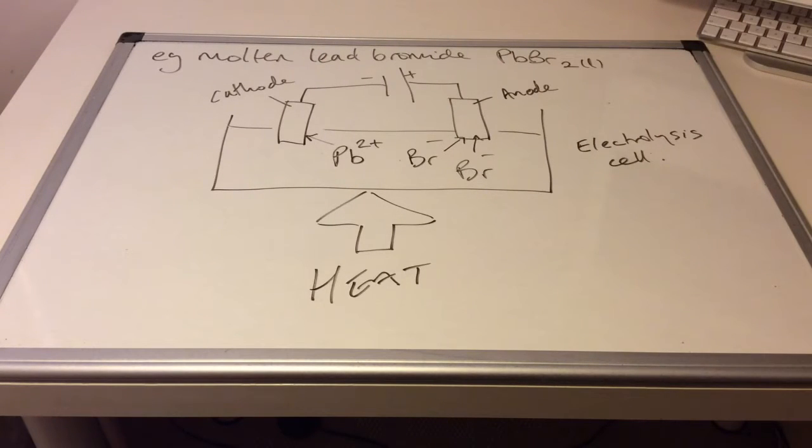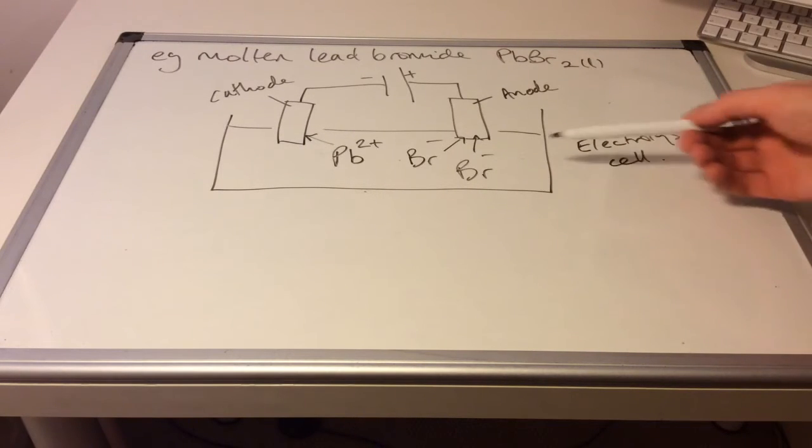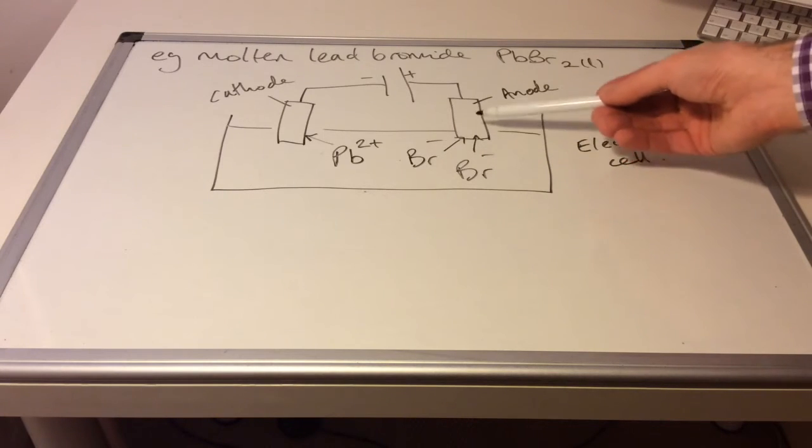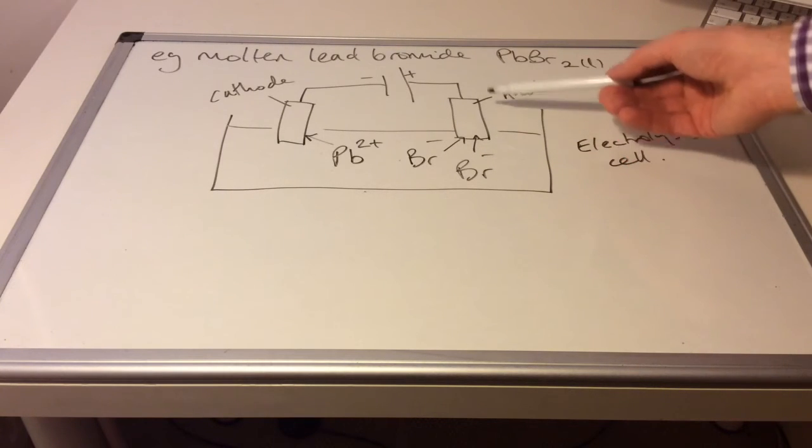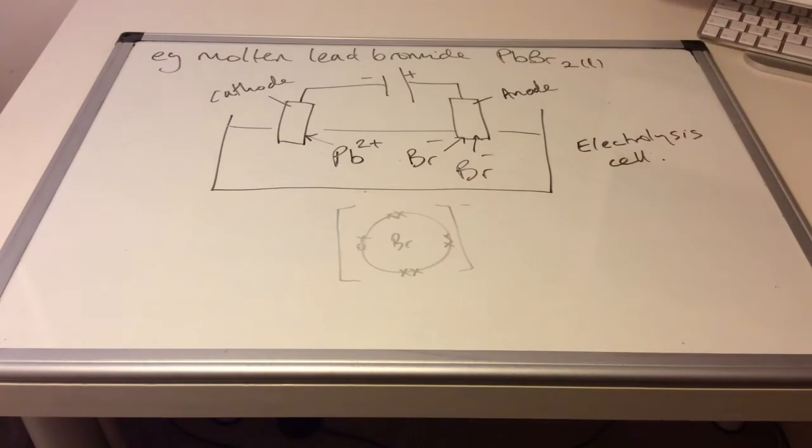Again, opposite charges attract. So hopefully so far so good, that all makes sense, nice and simple. What we need to do now is work out what actually happens to these bromide ions when they get to the anode. And what happens to the lead 2 plus ions when they get to the cathode.